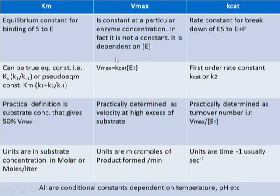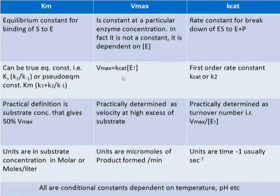Hidden within Vmax is the true constant — the second constant defining a Michaelis-Menten enzyme — which is Kcat. Kcat is the rate constant for breakdown of ES to E plus P; it is a first-order rate constant, also called k2, and practically it is the turnover number. Kcat equals Vmax divided by Et. If you know the maximal velocity at a particular enzyme concentration, you can determine the turnover number. Units of Kcat are per time, typically per second or per minute.